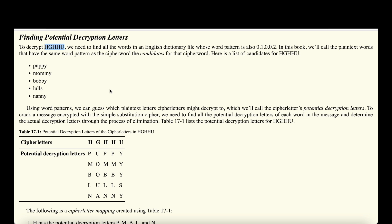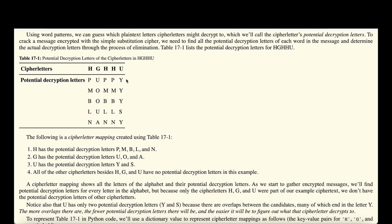In practice, when we want to decrypt a message — for example our message from before — we're going to use an English dictionary and compare the words that match the word pattern. In the notation we learned, that would be 0.1.0.0.2. There can be a number of different candidates, for example puppy, mommy, Bobby, and so on. We can then map those words to the cipher letters. So the cipher letter H has potential decryption letters P, M, B, L, or N, and G has only the options U, O, and A. We can do that for each cipher letter.